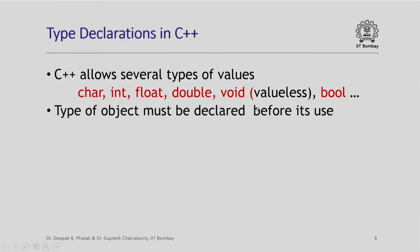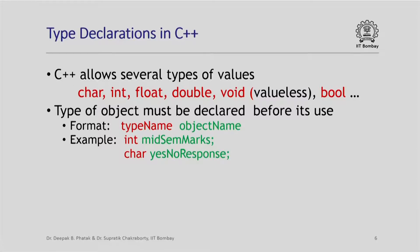The type of an object must always be declared before its use — you cannot use an object until you have declared its type. The way you define the type of an object is by saying 'type_name object_name'. For example, I could have 'int midsem_marks' or 'char yes_no_response'. I have used variable names here which indicate what their purpose is, and this is telling what kind of value can be stored in this variable.